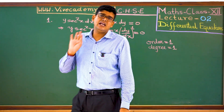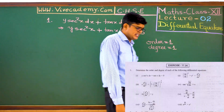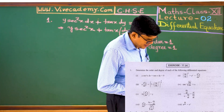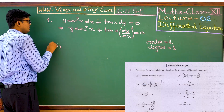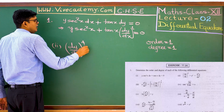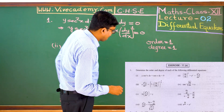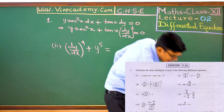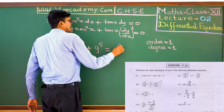I hope you are clear. Next question: (dy/dx)⁴ + y⁵ = d³y/dx³.